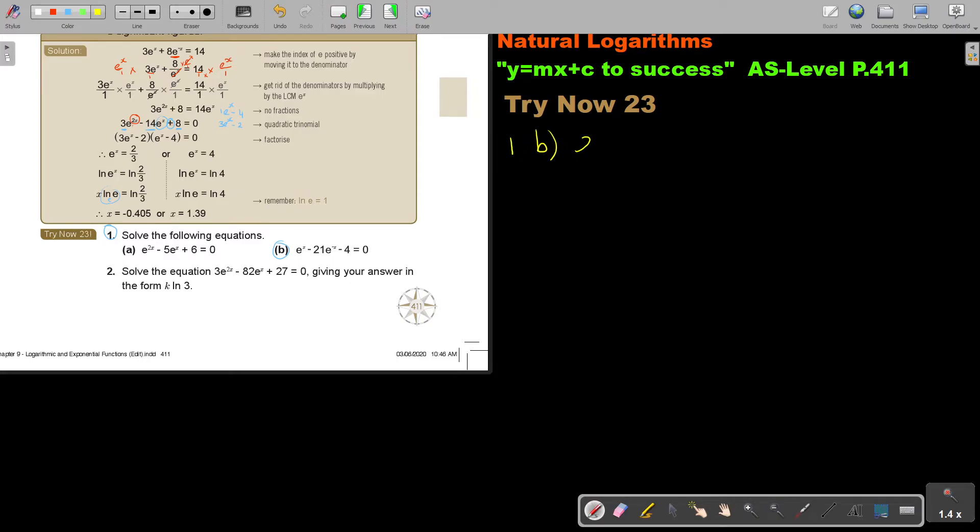1B. Okay. I'm just going to rewrite. e to the power x minus 21, e to the power negative x minus 4 equals 0. I just want to say, this number A, it was not necessary. You could basically factorize from the start. The same with number 2. But this one, because of that negative, you must first do the following, just like the example I showed you.